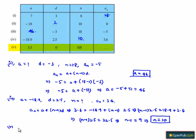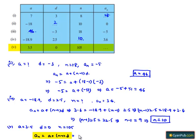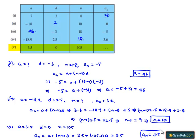Moving on to the fifth problem: a is given as 3.5, d is given as 0, and n is given as 105. Therefore, aₙ = a + (n−1) × d = 3.5 + (105−1) × 0 = 3.5 + 0 = 3.5. Therefore, the answer is aₙ = 3.5.